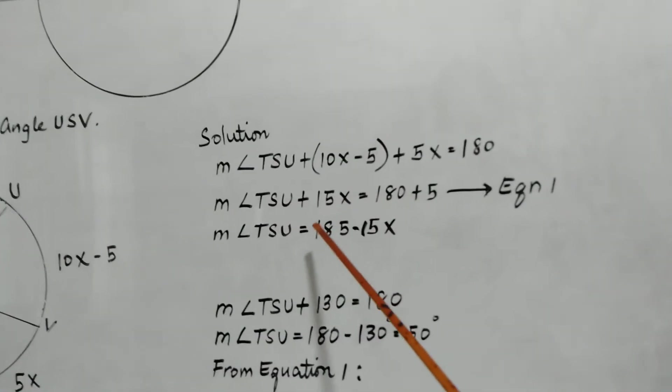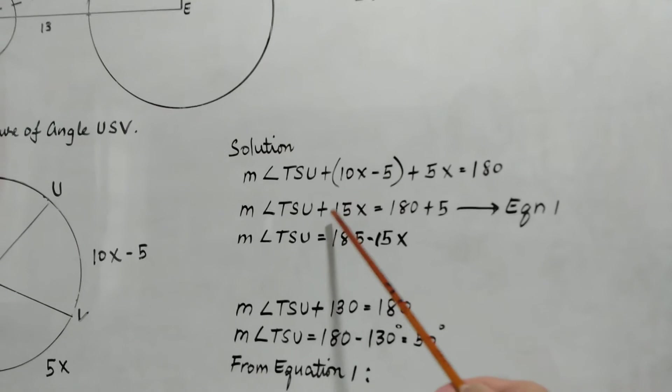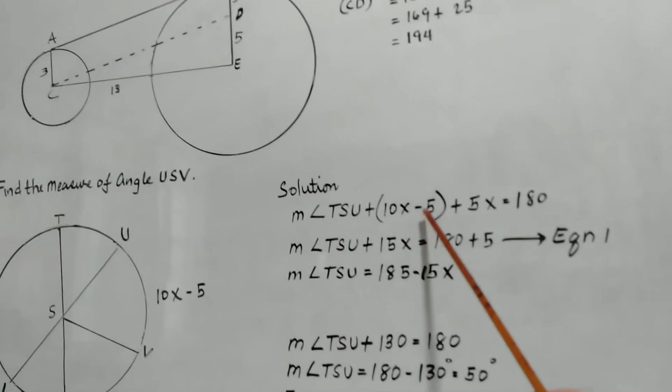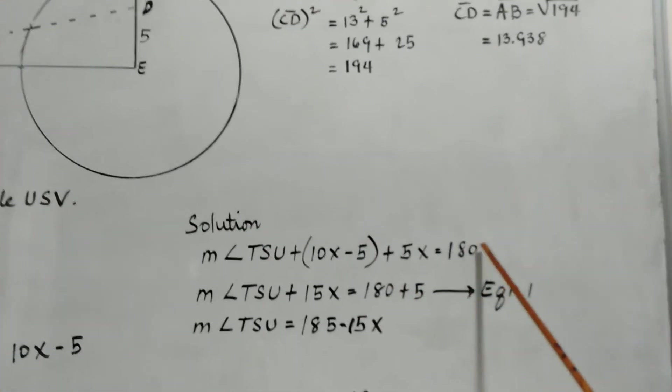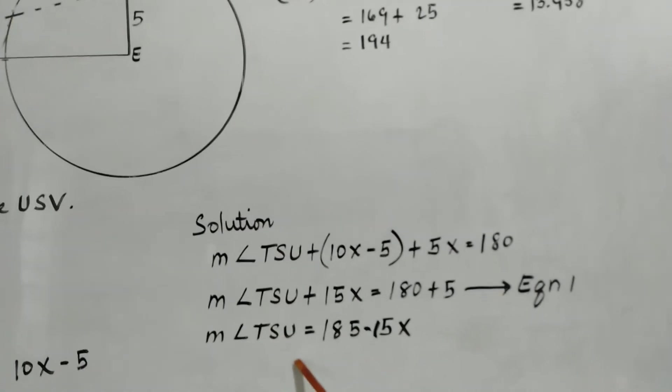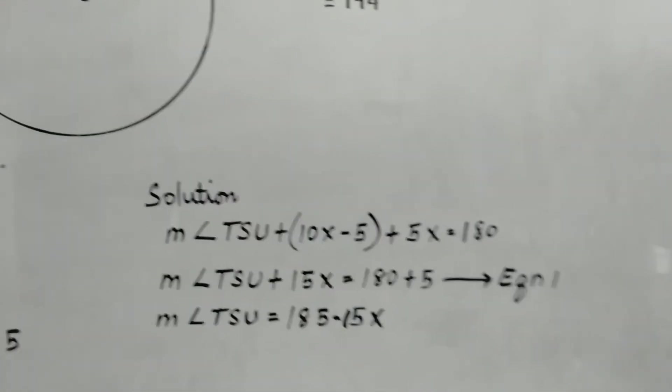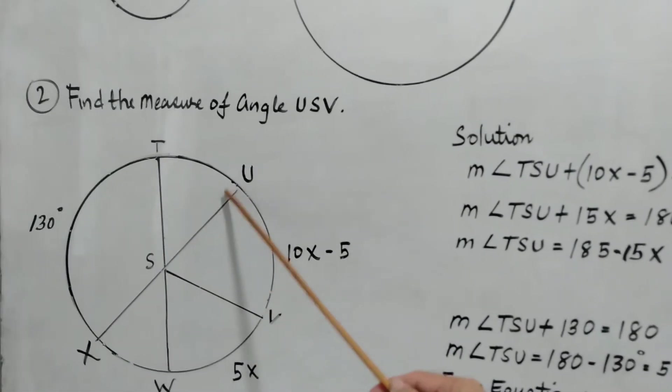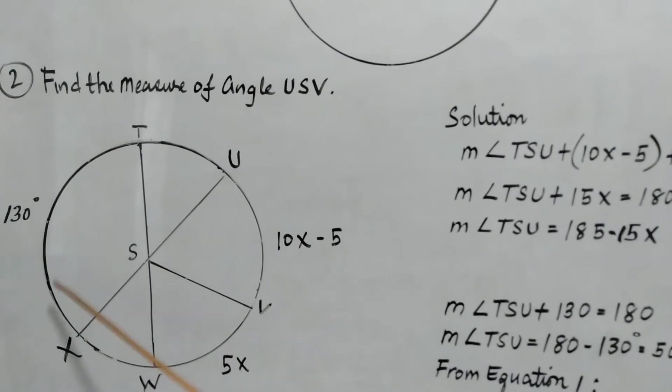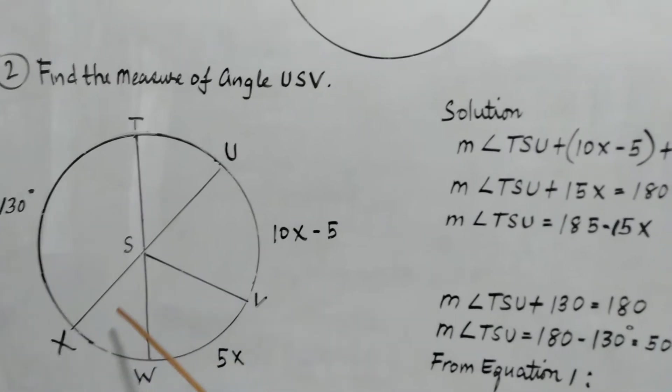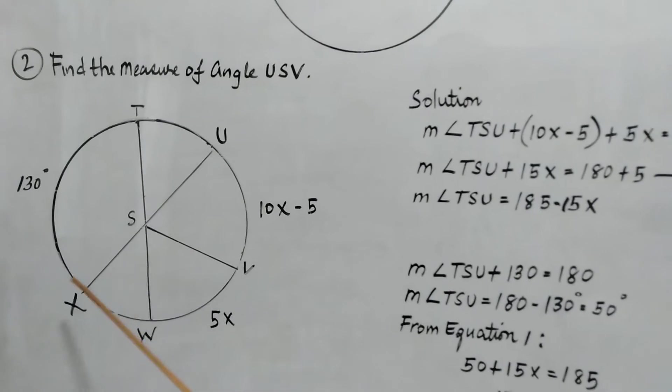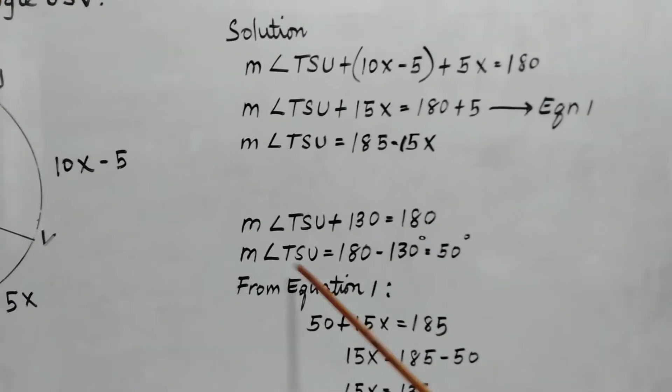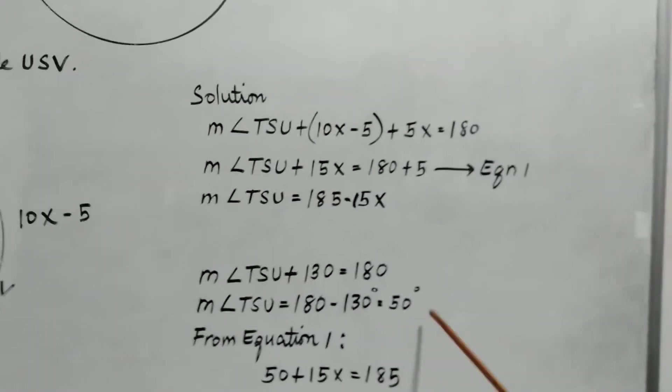So we just rearrange. So measure angle TSU plus 5X, this 5X here, and then plus 10X, that will be equal to 15X, and we transpose negative 5 to the right side of the equation. So measure of angle TSU is equal to 180 minus 15X. And we also notice here, measure of angle TSU plus the given arc here, 130 degrees. So measure of angle TSU plus 130 is 180, so to get the measure of angle TSU is equal to 180 minus 130, and that will be equal to 50 degrees.